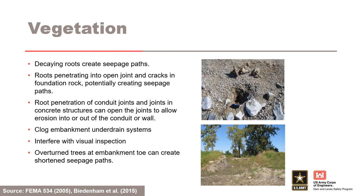Vegetation growing on embankments can lead to concentrated leak erosion. Decaying roots or roots penetrating into open joints and cracks in the foundation rock can create seepage paths, and overturned trees can create shortened seepage paths. Root penetration of conduit joints and joints in other concrete structures can open the joints to allow erosion into or out of the conduit or wall. Roots can also clog underdrain systems, and vegetation in general can hinder visual observation. A hole shown in the top right photo was created on the waterside levee slope by a rotted tree stump.